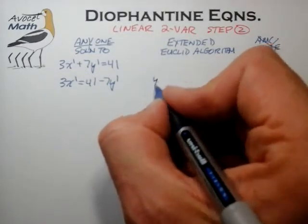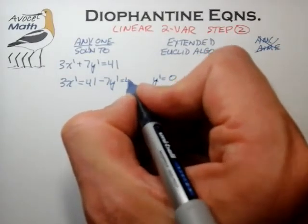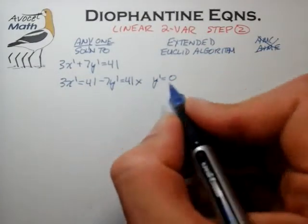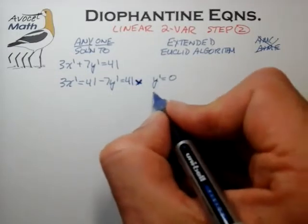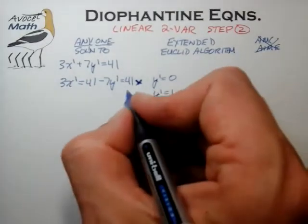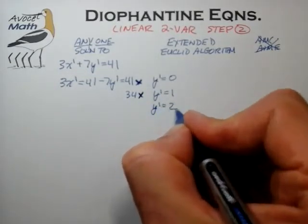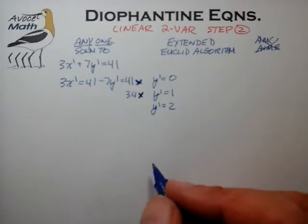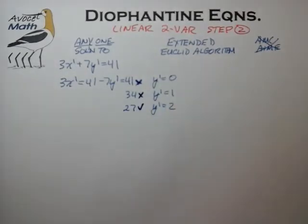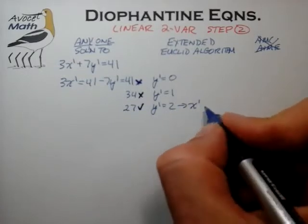Let's take some straightforward guesses. First, y' = 0 gives us 41 on the right-hand side, which is not a multiple of 3. Then y' = 1 gives 41 − 7 = 34, also not a multiple of 3. Finally, y' = 2 — our last guess — does form a multiple of 3. Plugging that back in, we find x' = 9.